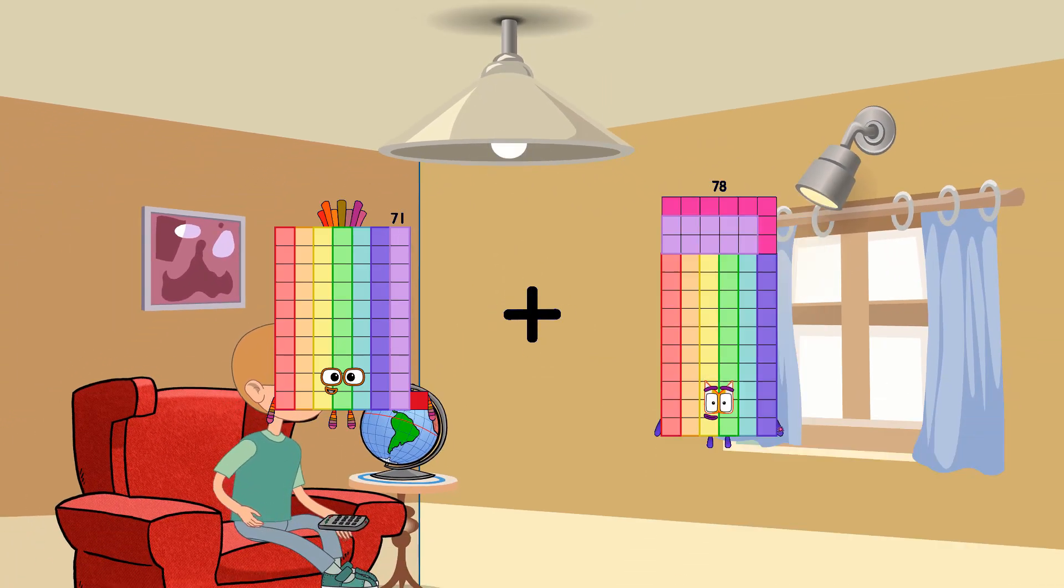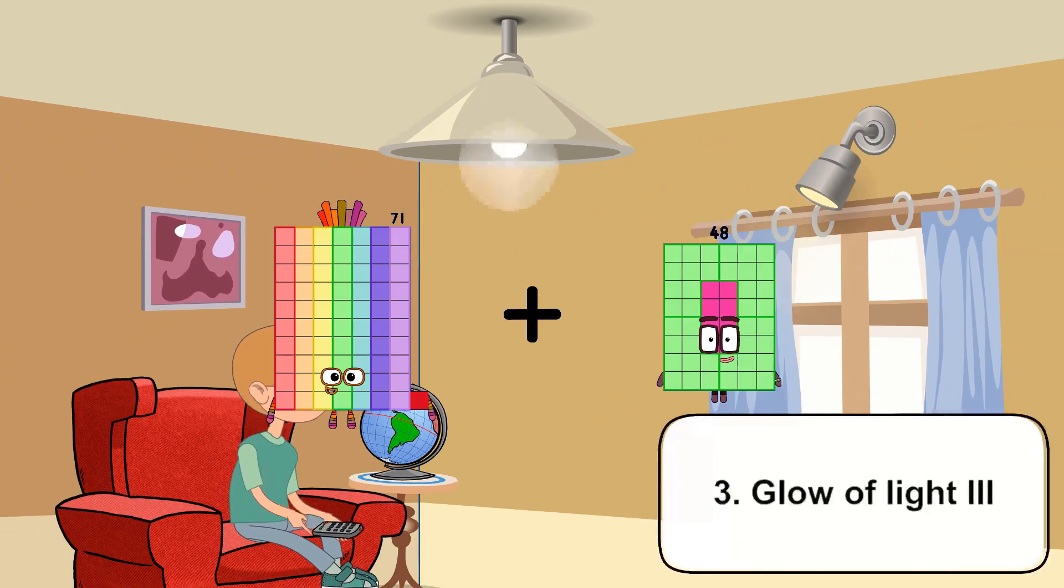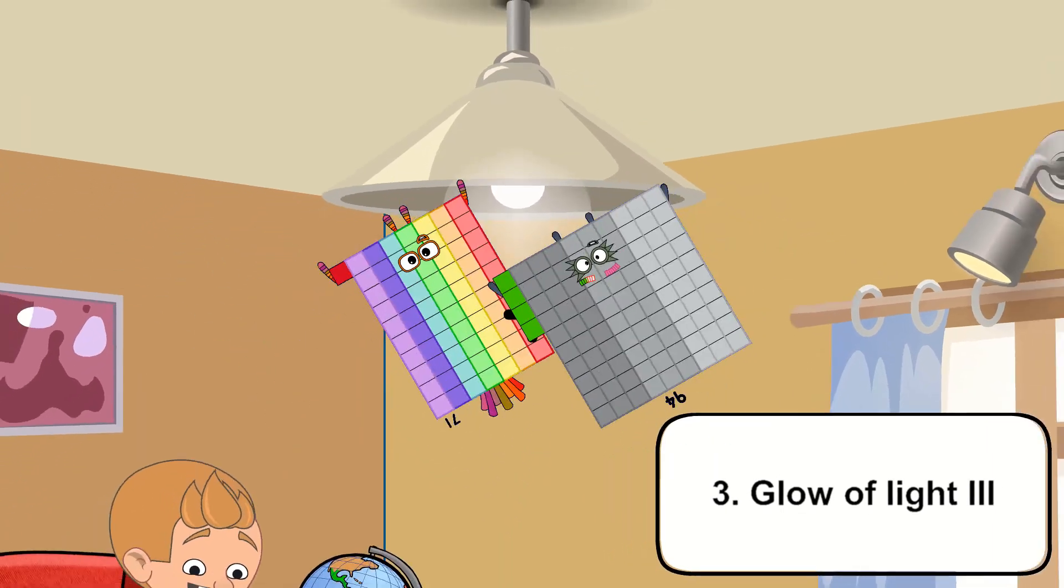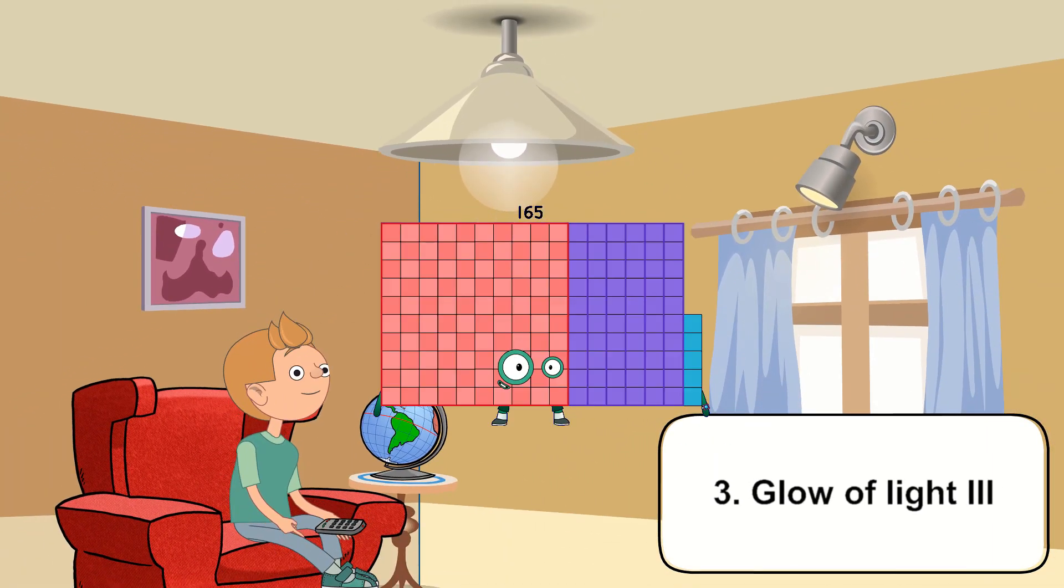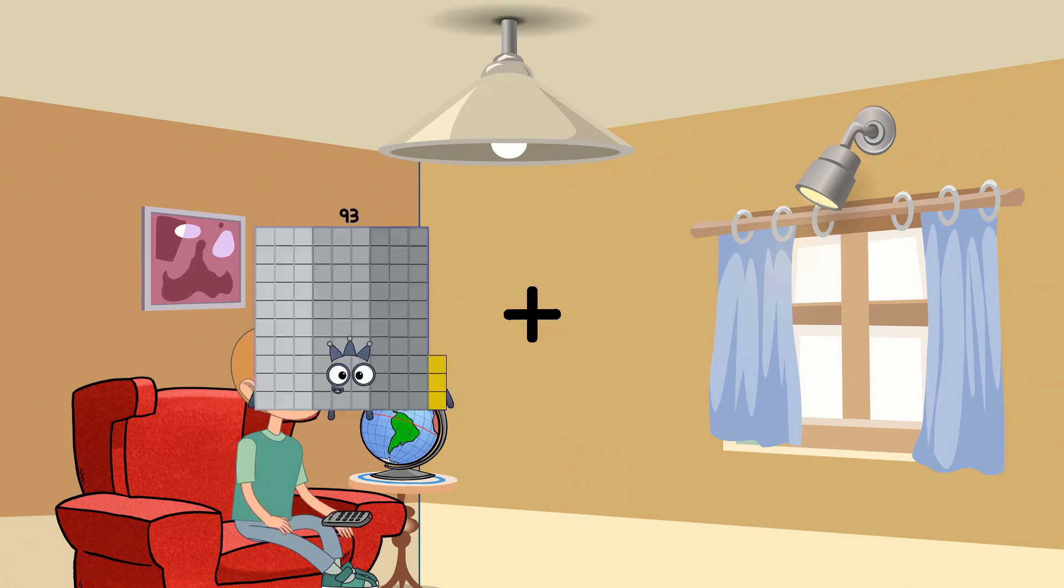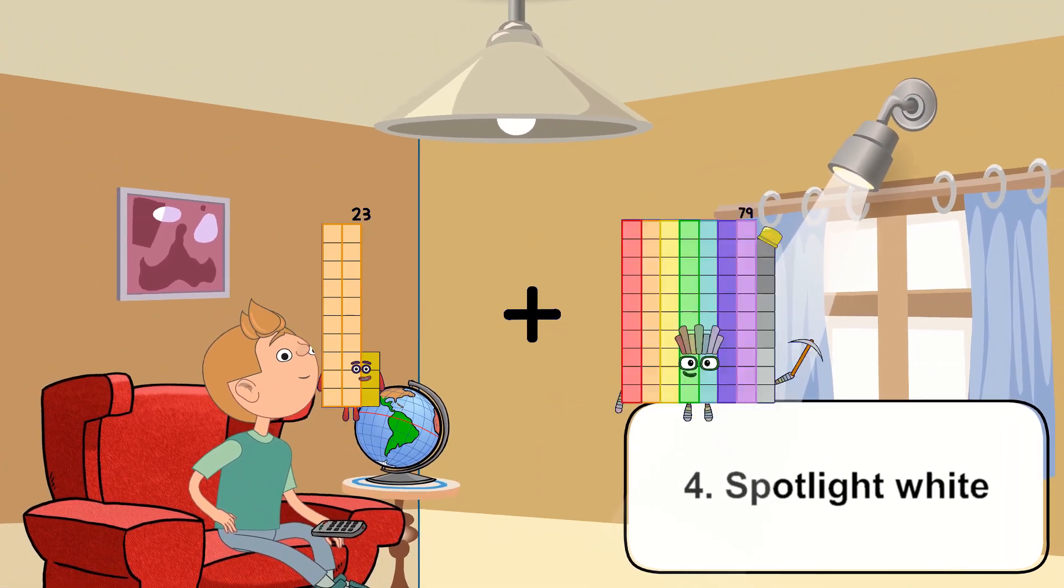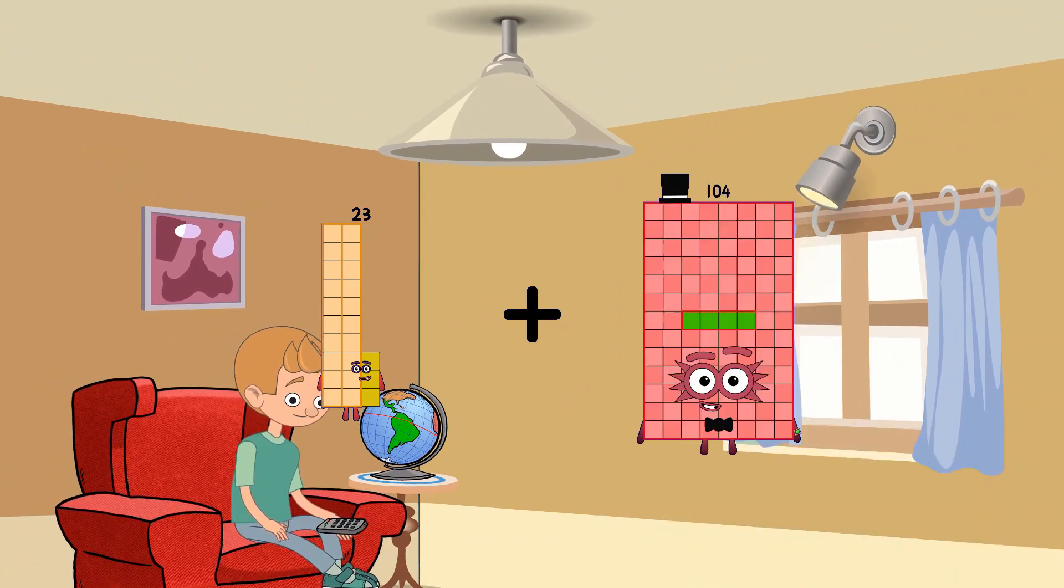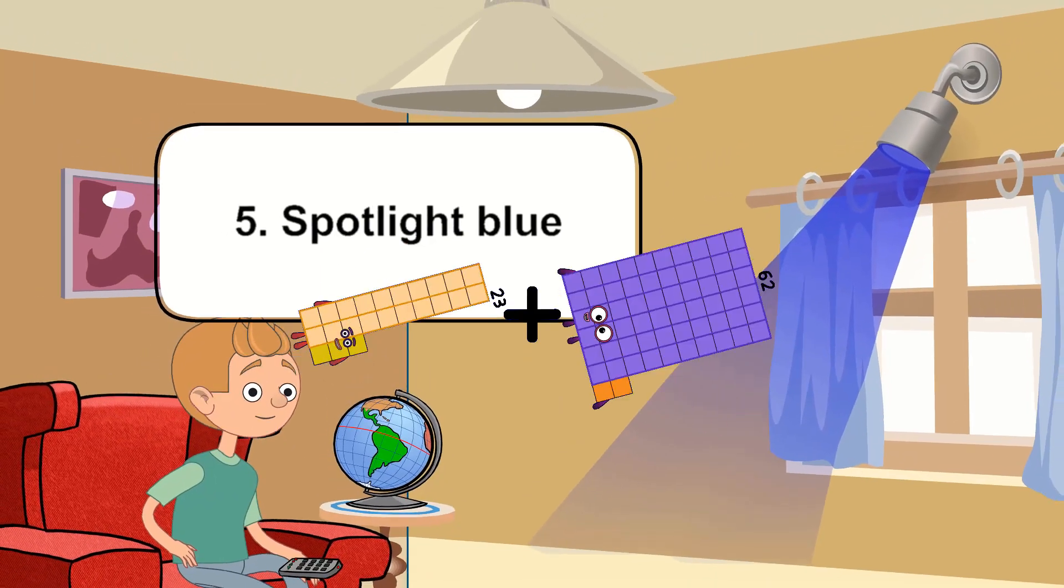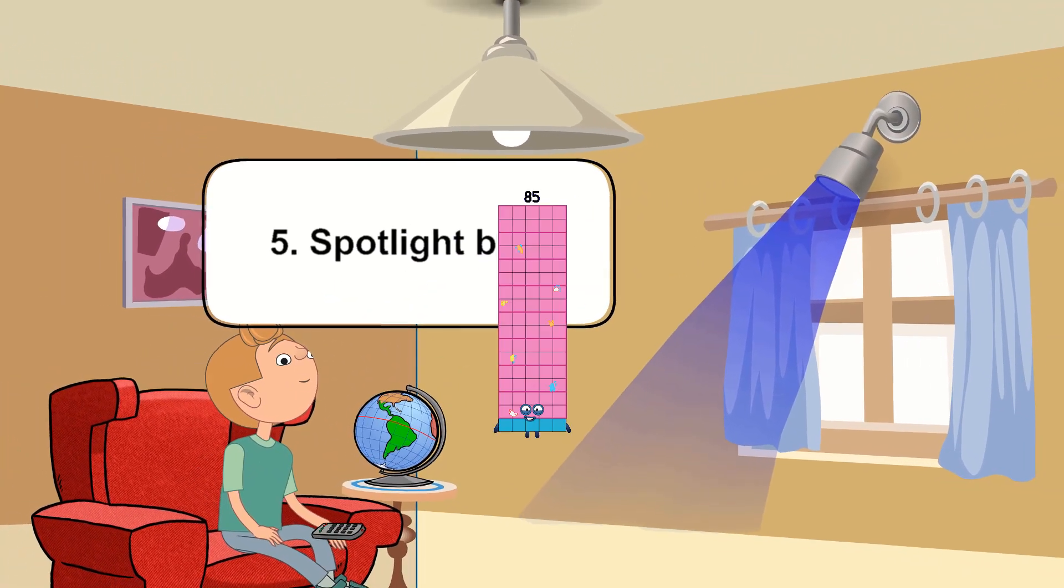71 plus 94 equals 165, 23 plus 62 equals 85.